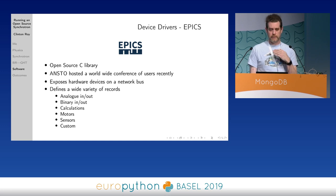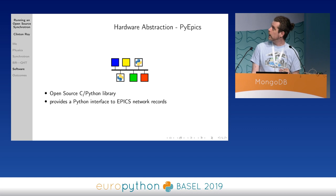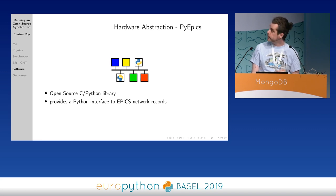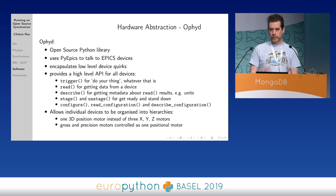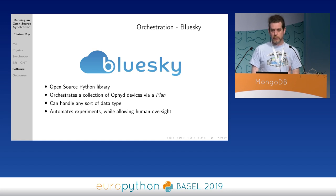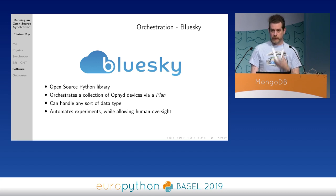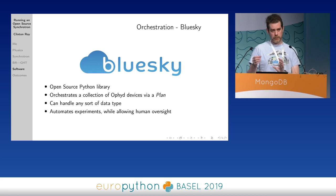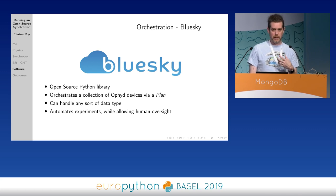I'll skip over EPICS - it's a low level networking tool. I'll also skip over PyEPICS because it's a very good wrapper around EPICS but doesn't provide anything particularly novel. Ophyd is the part where we really come in - it abstracts away all of the funky things that each hardware item does. If there are any quirks in the hardware, we have to encapsulate it in the Ophyd layer. BlueSky is our orchestration tool - you come up with a recipe for how to run an experiment, and it handles all of the problem cases where you're halfway through an experiment, something goes wrong, you can pause, fix it up and continue on. It's in use at other synchrotrons around the world, so we can build on a lot of that.